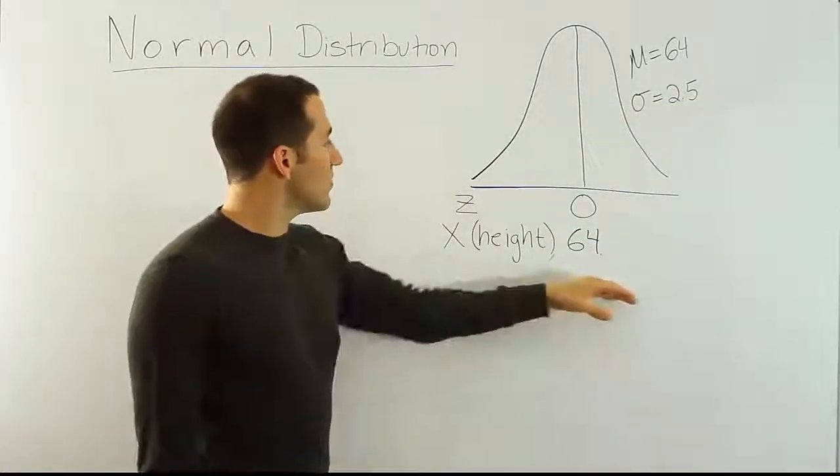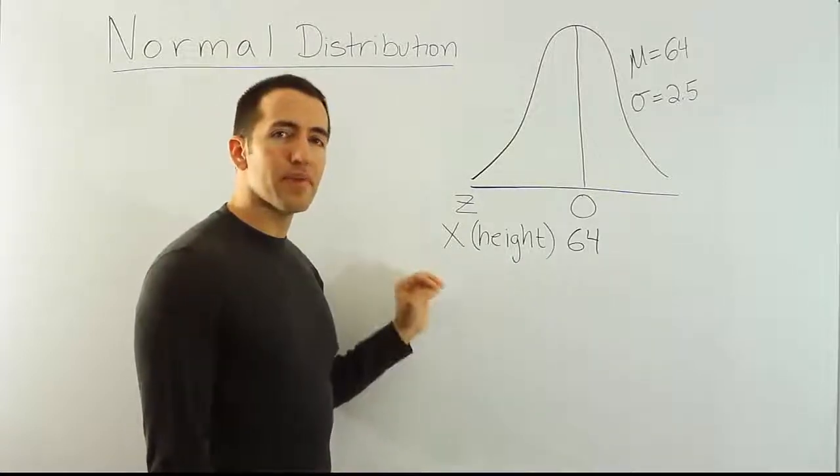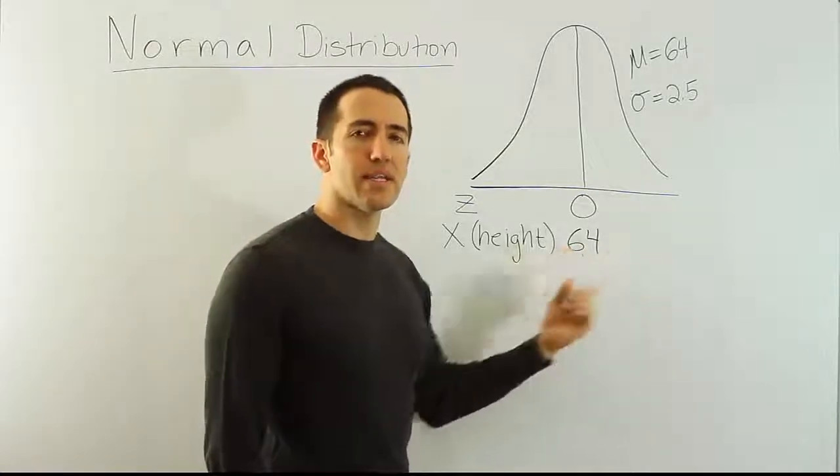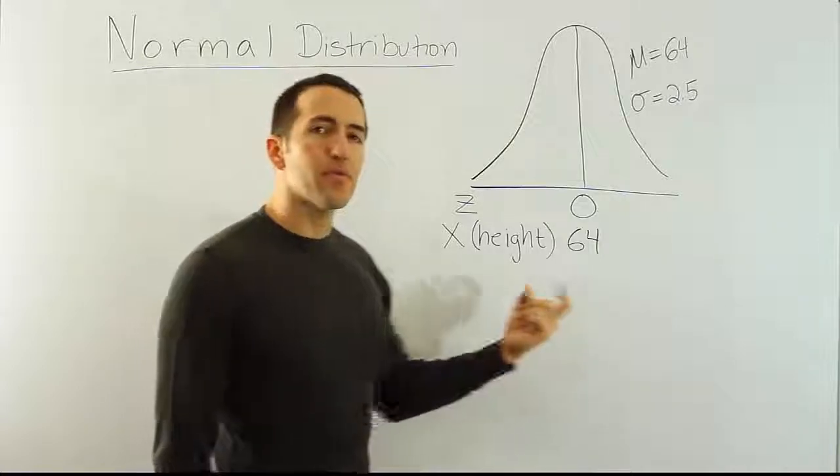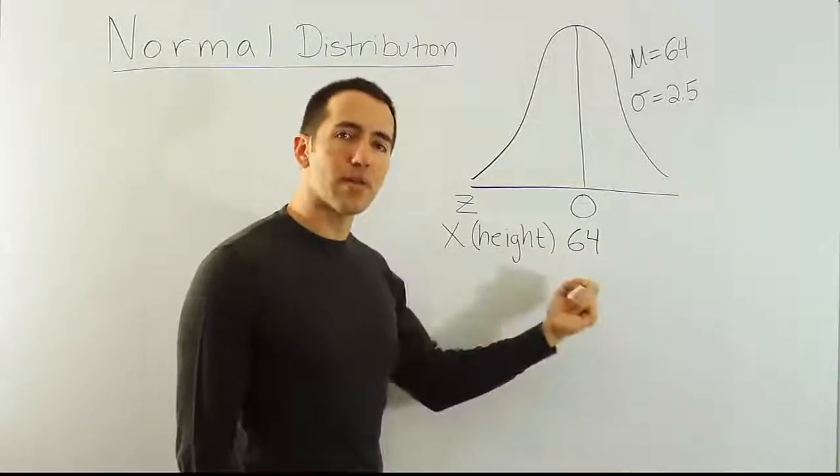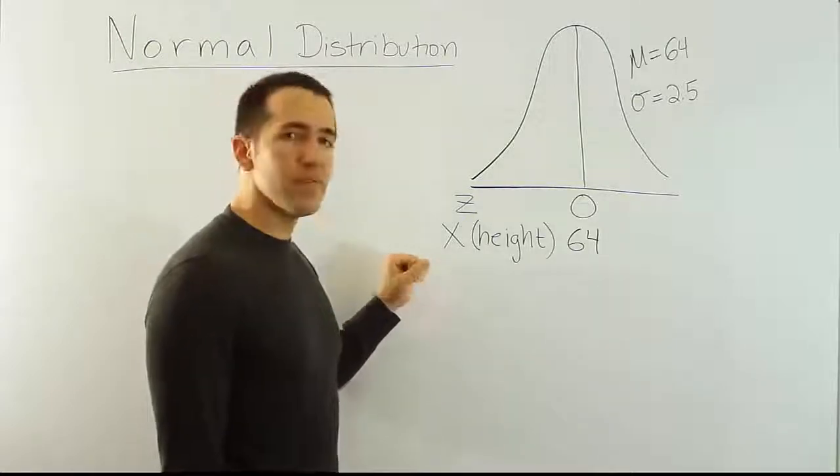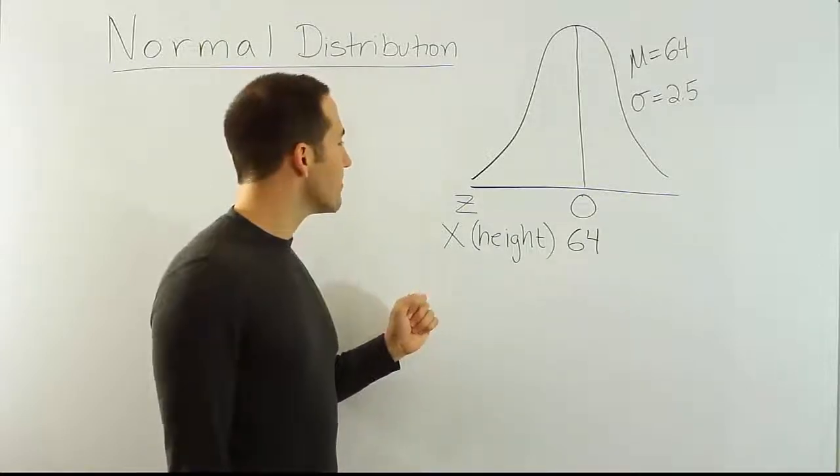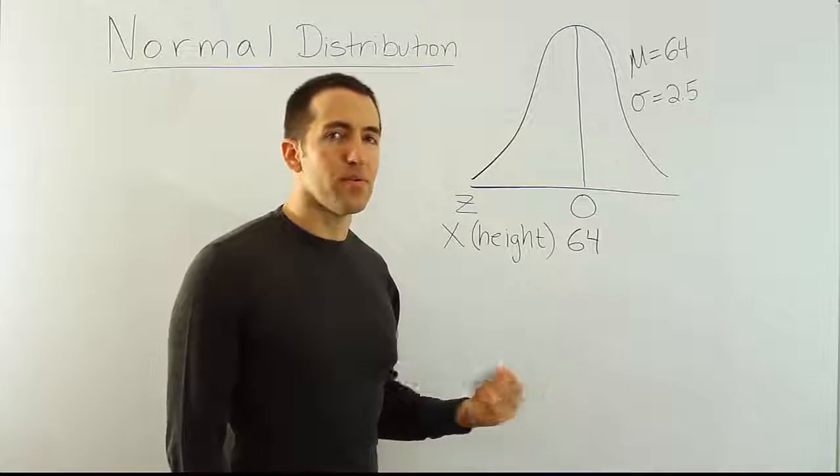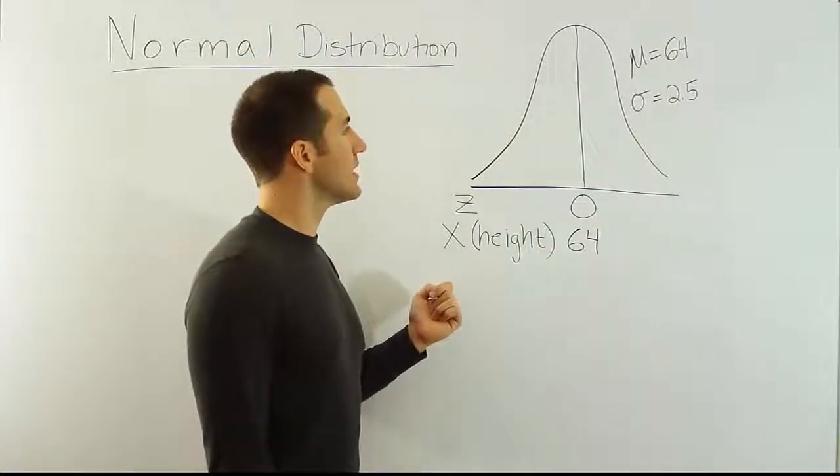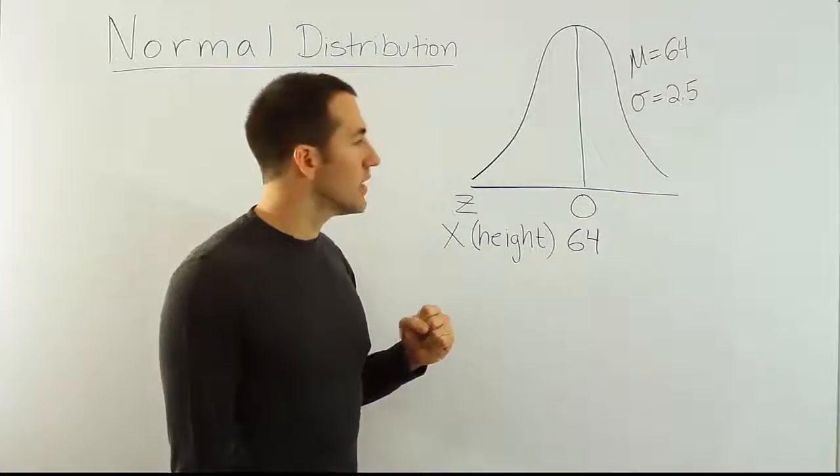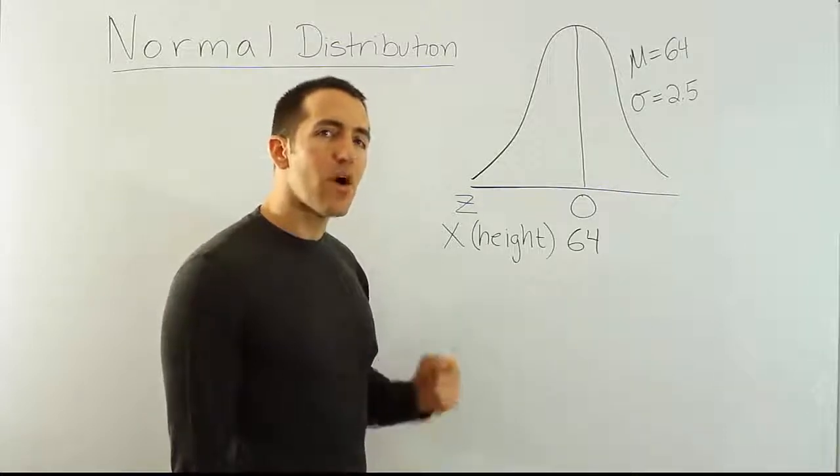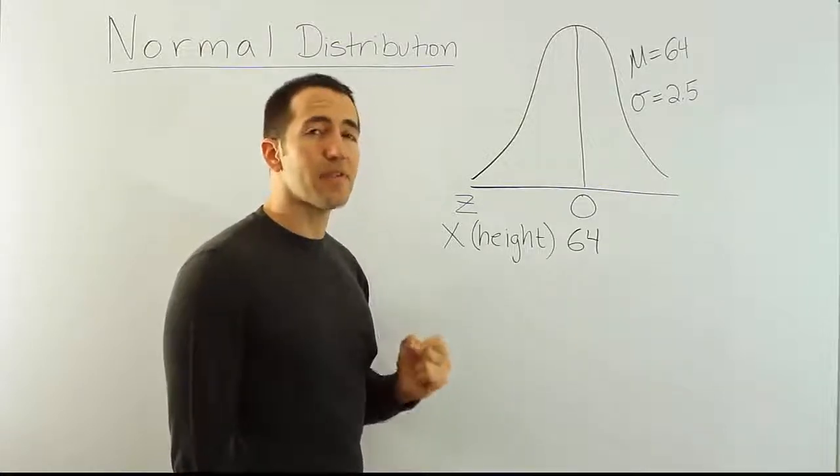What I'm going to do in this video is look at a different kind of problem than we've done in the past with the bell curve. In the past, we did problems like find the probability a woman is taller than 69 inches. In those problems, we're looking for a probability. But the problems we're going to work with in this video, we're not doing that. We're going to be doing something in reverse. So what we're actually going to do is say, how tall does a woman have to be so that she's taller than, let's say, 95% of the female population?